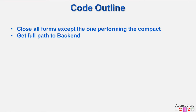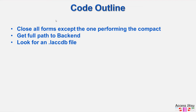Next, we need the full path and file name to the back end database. We also want to make sure we have exclusive access to the database, so we're going to look for a locking file — a .laccdb file. If that exists, we know that somebody else is logged into that back end, and we can't continue with our compact and repair.